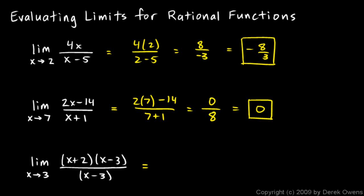A zero denominator is what shows up in this third case. If we plug in x equals 3, the factor x minus 3 becomes 0, giving us a zero numerator and a zero denominator — 0 over 0, which is an indeterminate form. When we get 0 over 0, we try to simplify the expression. Here we can cancel those factors out, meaning this original function behaves exactly like x plus 2, except there's a hole in the graph at x equals 3.